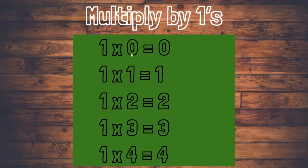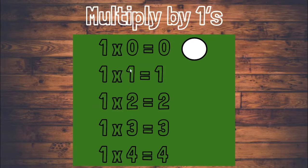One times zero equals zero. We need one group with zero inside of the group, so we know the product is zero. One times one equals one. We need one group with one flower inside of the group, which gives us one.